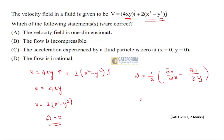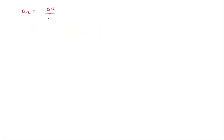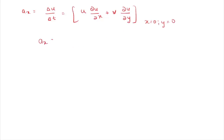For irrotational flow, omega = (1/2)(∂v/∂x - ∂u/∂y) = (1/2)(4x - 4x) = 0, so the flow is irrotational. For acceleration at x = 0 and y = 0: a_x = u(∂u/∂x) + v(∂u/∂y) = 0, and similarly a_y = 0, so acceleration is zero at that point.